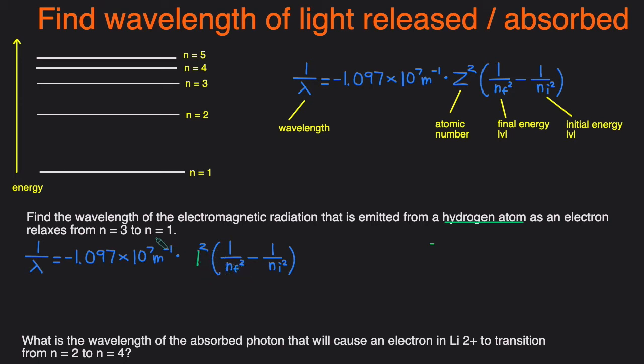The final energy level is 1 because it's dropping from 3 to 1. So replace n_f with 1 and the original energy level is 3. So replace that n_i with 3. Then we can just plug this into the calculator.